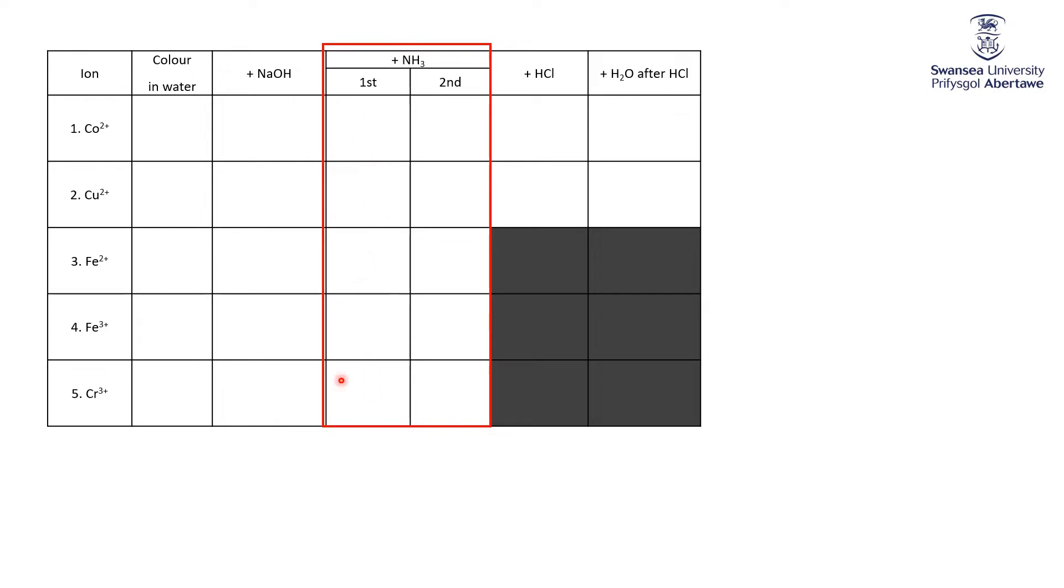So the first one in each case should have been the same result that you saw for the hydroxides, because all we're doing is essentially adding in a base, adding hydroxide. What's then interesting is when you keep adding ammonia to it. So that's the second addition of ammonia. Let's see what happens.